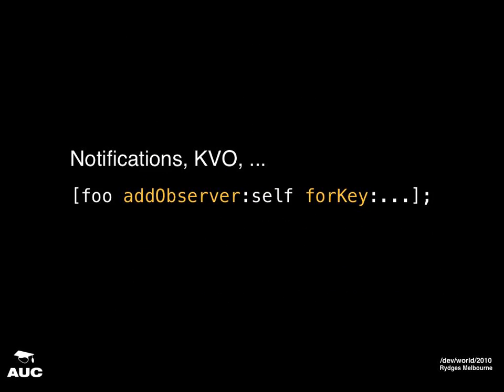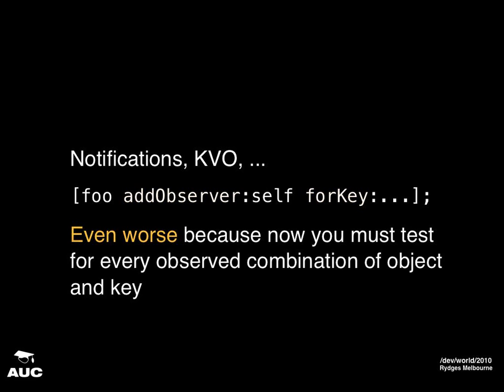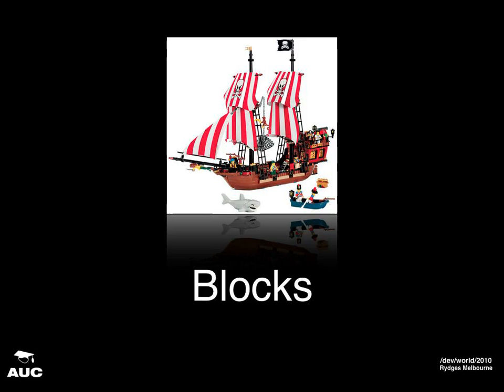Related to this: notifications and key value observing have the same problem. Not only might we be observing a single object, but we could be observing multiple keys on that object, so we end up with a massive if block split out into however many keys and objects we're observing. It just becomes really unwieldy. So: blocks to the rescue.